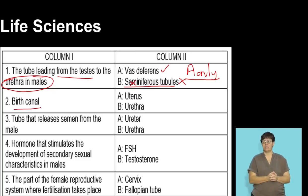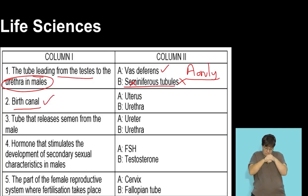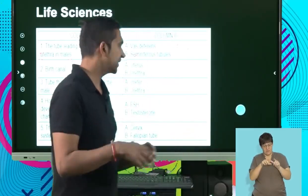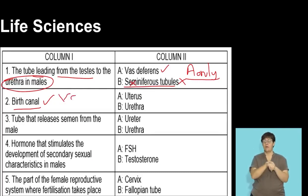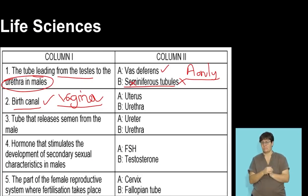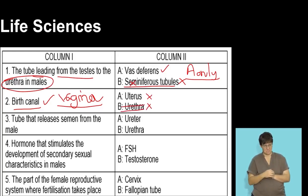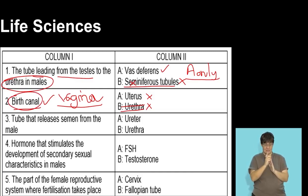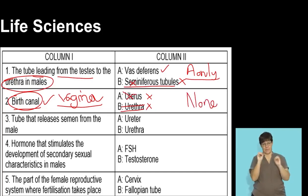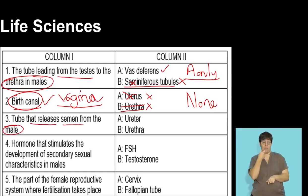The next term in column one is the birth canal. The birth canal refers to the passage through which the baby passes during a normal vaginal delivery — from the uterus into the vagina. The options in column two are the uterus and the urethra. The urethra is certainly not the birth canal, and while the uterus is where the baby develops during gestation, it is not the birth canal itself. Therefore none of these options are correct — the answer is none.